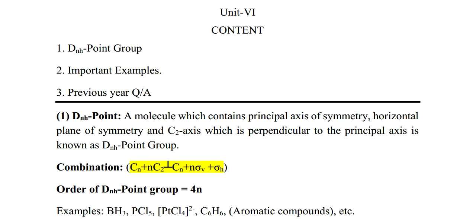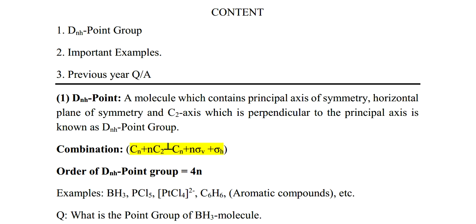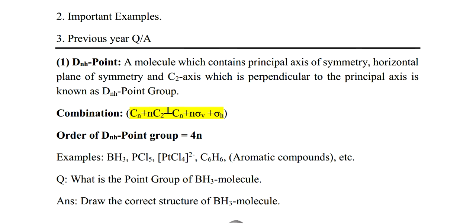What is the D_nh point group? A molecule which contains a principal axis of symmetry, a horizontal plane of symmetry, and C2 axes perpendicular to the principal axis is known as the D_nh point group. The combination is: C_n + nC2 perpendicular to C_n + n·sigma_v + sigma_h. The order of the D_nh point group is 4N.